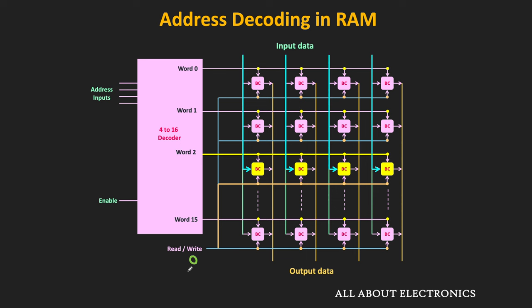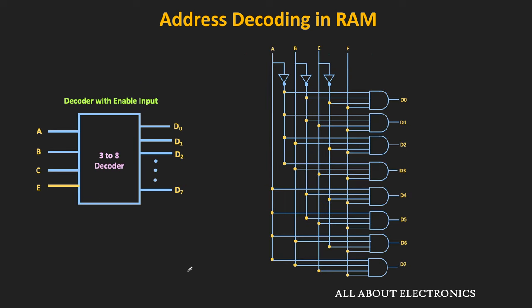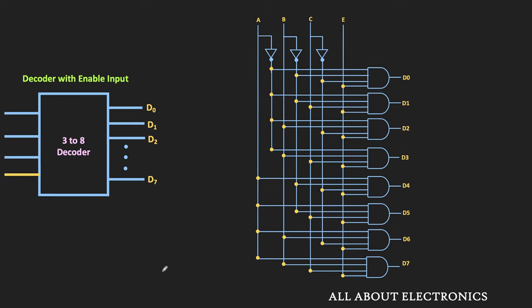That is the internal construction of the RAM — with the help of the decoder, addresses are decoded and read/write operations are performed. As covered in earlier decoder videos, a 3-to-8 decoder with an enable input requires 8 AND gates, and each AND gate requires 3 inputs for the input lines plus 1 more input for the enable pin.